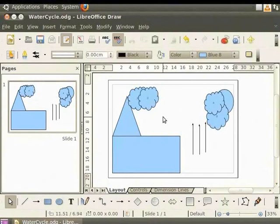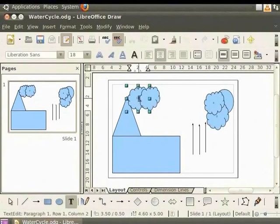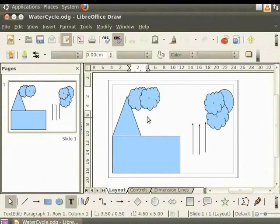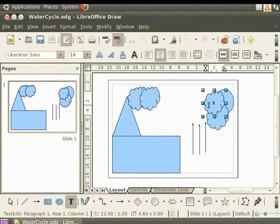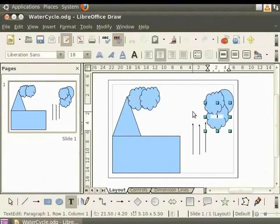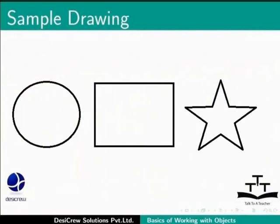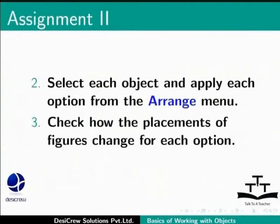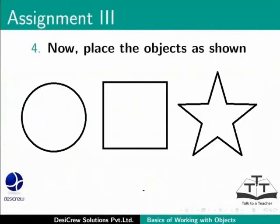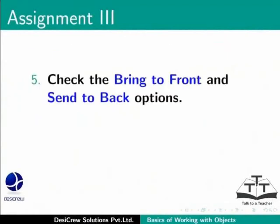Next, let's delete the numbers from the clouds. To do so, select the cloud and double click. Then select the number and press the Delete key on the keyboard. Pause the tutorial here for this assignment. Draw a circle, a square and a star and place them as shown below. Select each object and apply each option from the Arrange menu. Check how the placements of figures change for each option. Place the objects as shown on this slide and check the Bring to Front and Send to Back options.